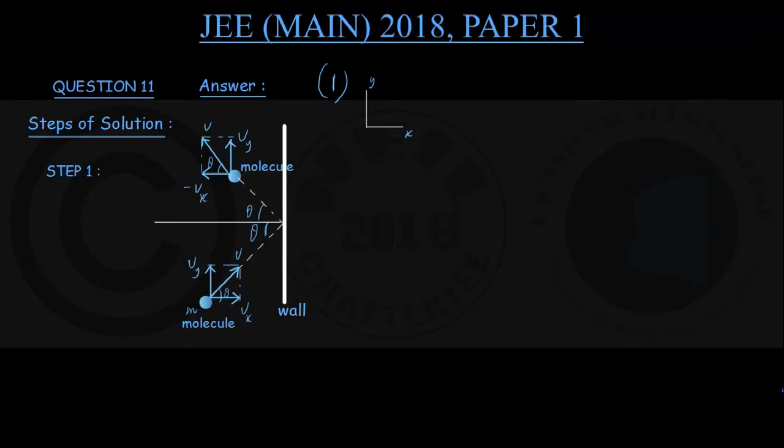You also take down some data given in the question for future use: mass of each hydrogen molecule is given to be 3.32 × 10^(-27) kg. Number of collisions per second, that is 10^23 per second.